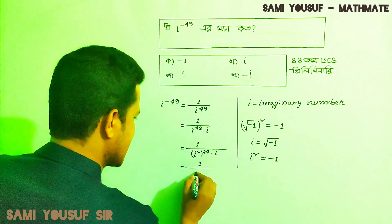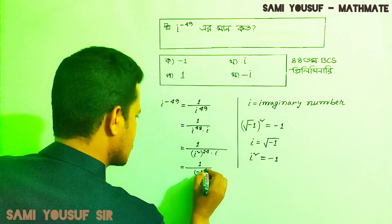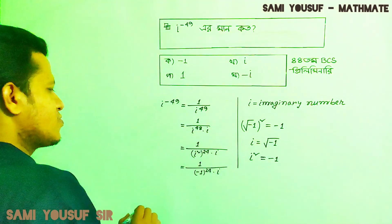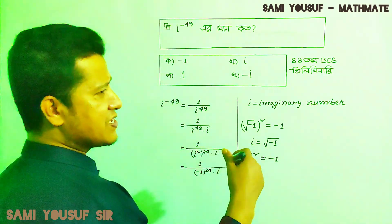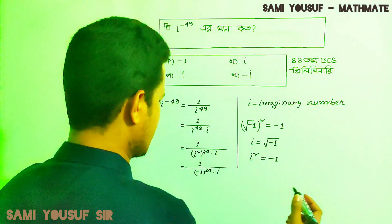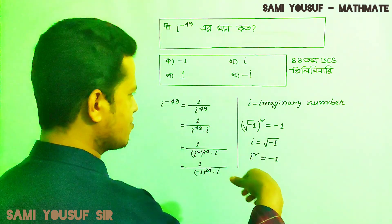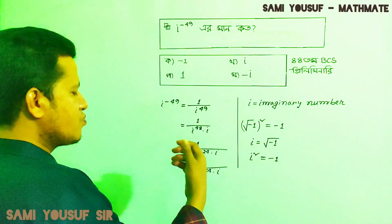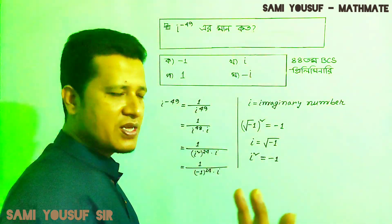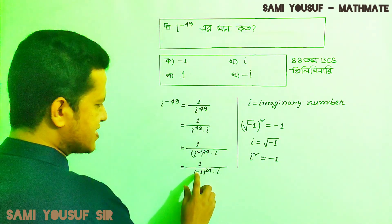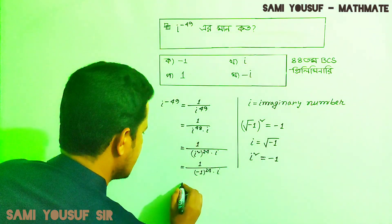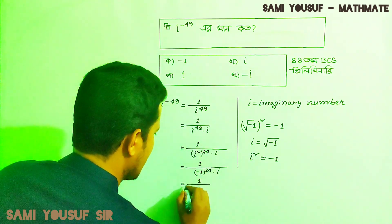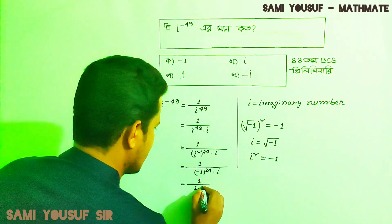The value of (i²)^24, where i² is minus 1 raised to the power of 24, equals 1. So i to the power of 48 equals 1.